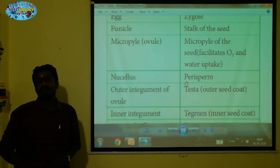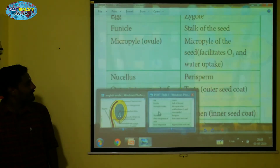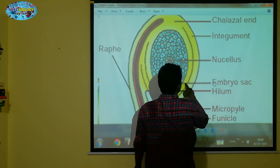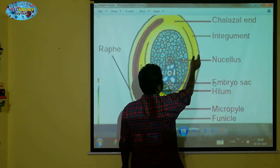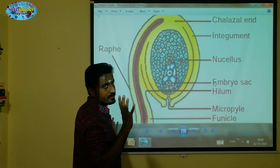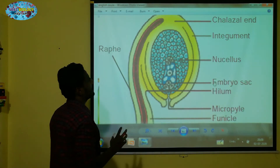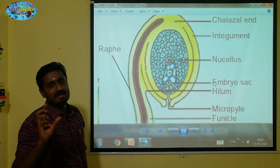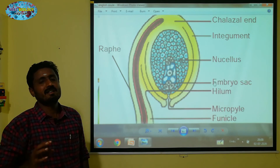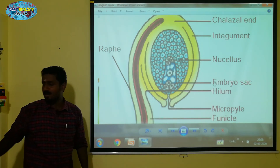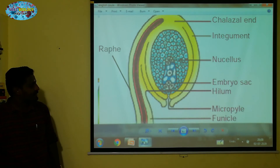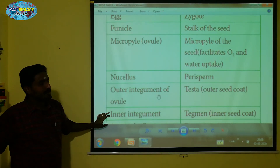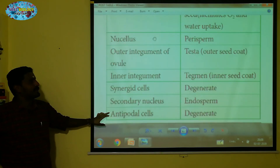Outer integument and inner integument — I'll show you the name. The outer integument is the testa. The inner integument is the tegmen. So when the ovule becomes a seed, the outer integument is called testa and the inner integument is called tegmen.